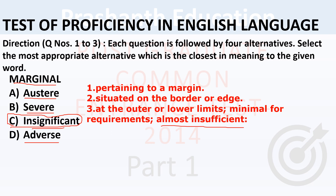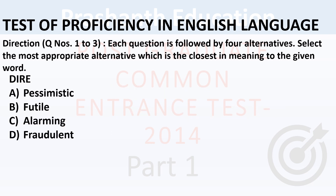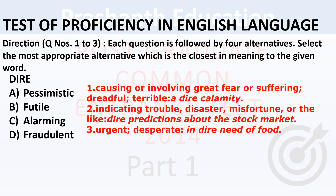Next question: synonym for 'dire'. Options: pessimistic, futile, alarming, fraudulent. Dire meaning: causing or involving great fear or suffering, dreadful, terrible — dire calamity — indicating trouble, disaster, misfortune, or urgent and desperate, like a dire prediction about the stock market. The correct answer is 'alarming'.